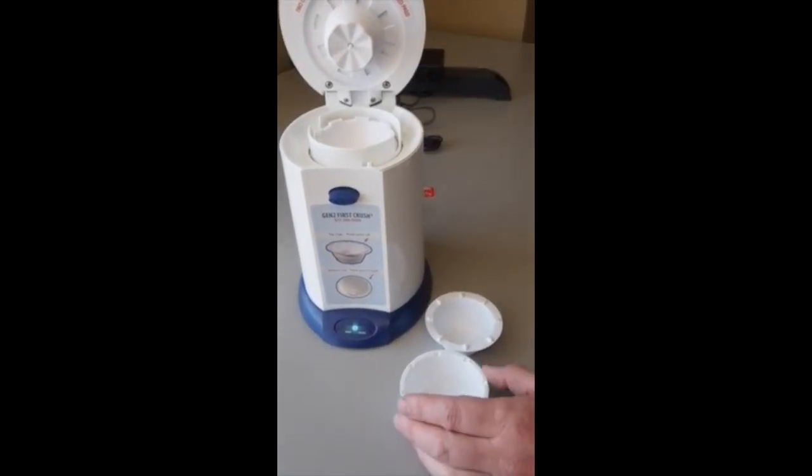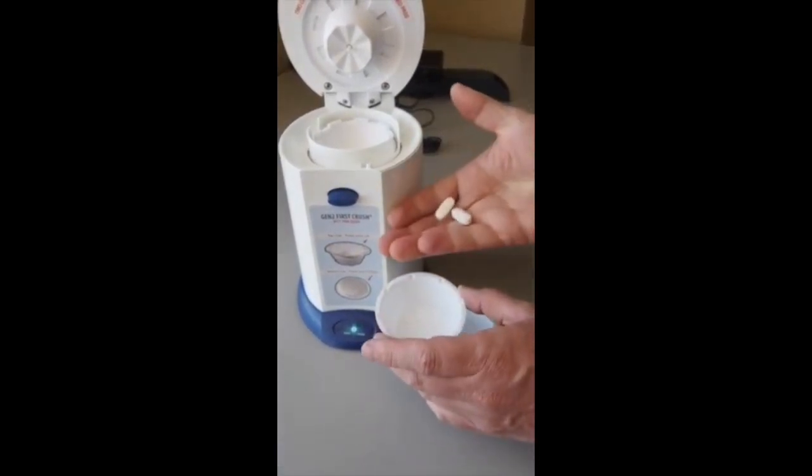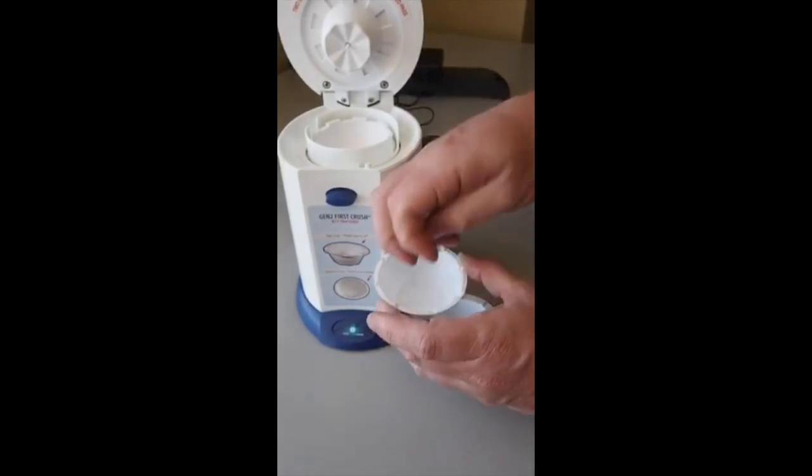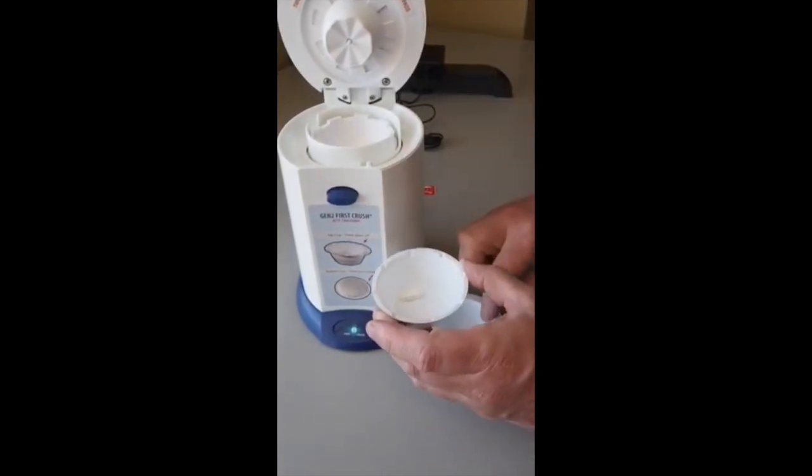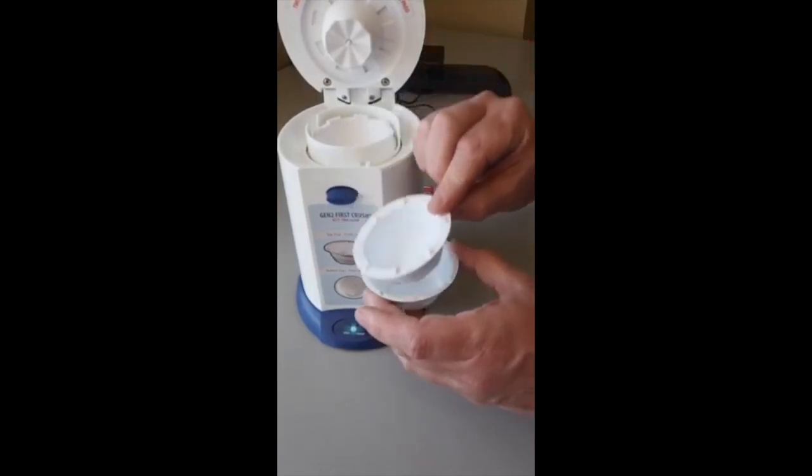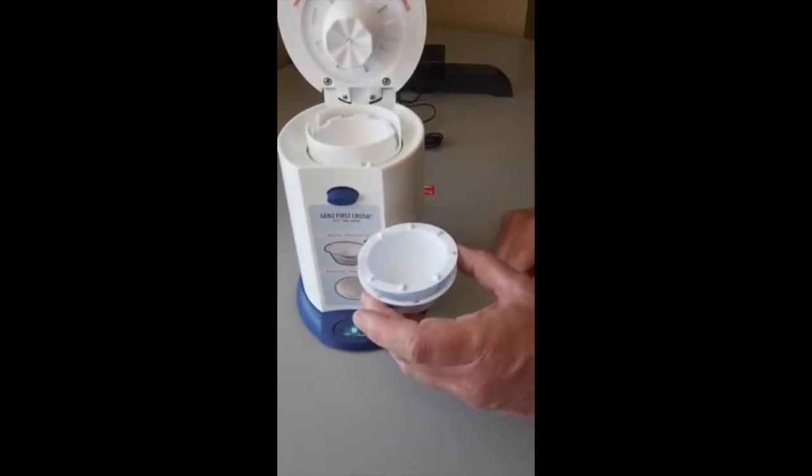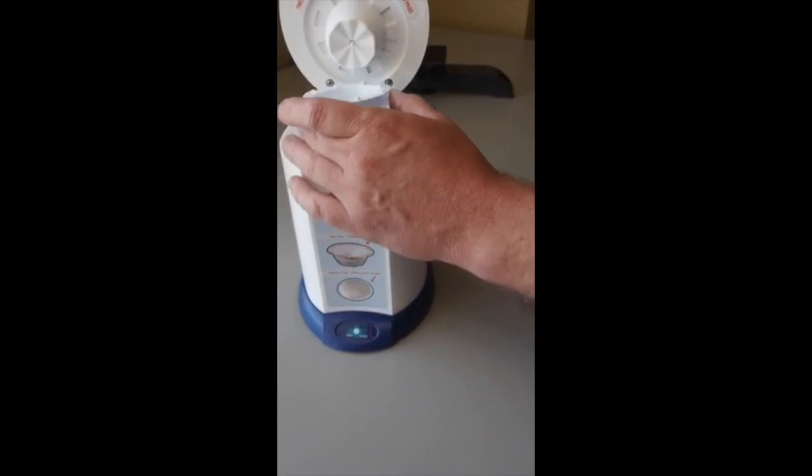When crushing, we typically recommend five to six medium sized pills be crushed at once. If there's smaller pills, you can do more. If there's larger pills, you may wish to do less. Certainly this is with deference to your own policies and procedures.